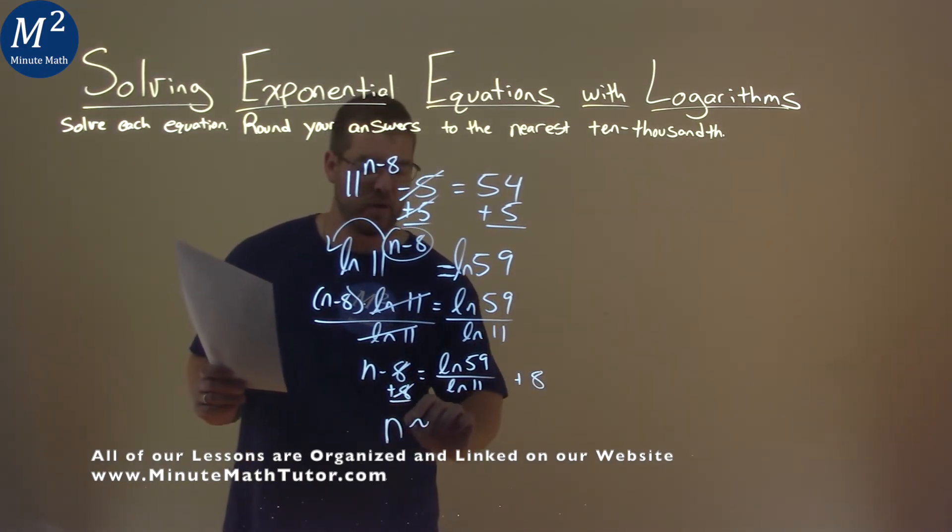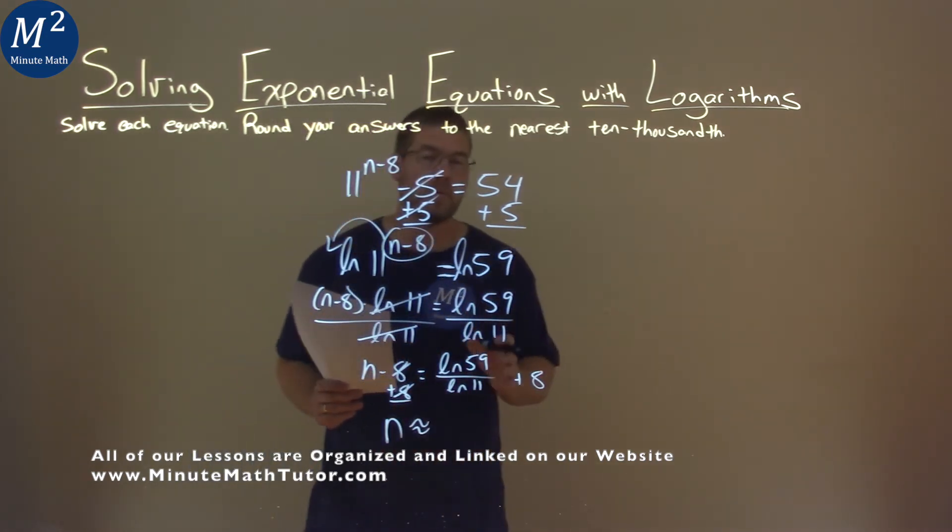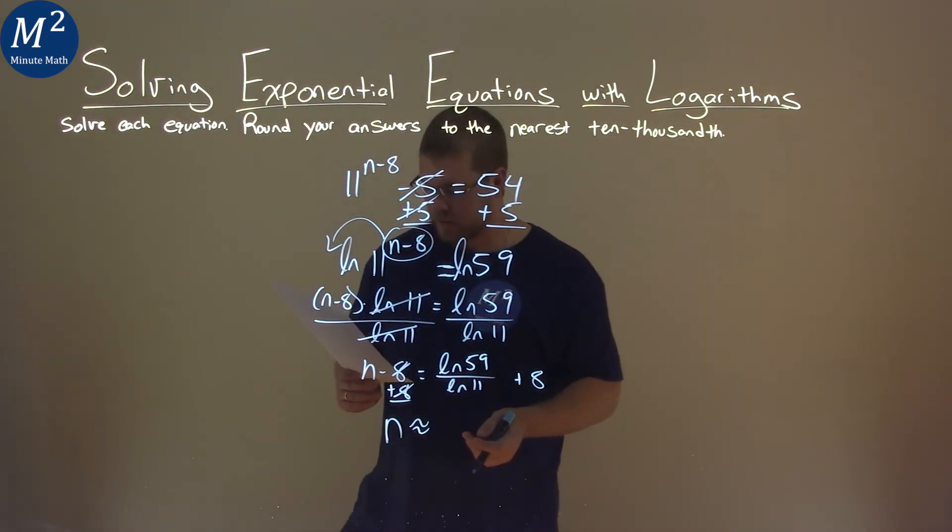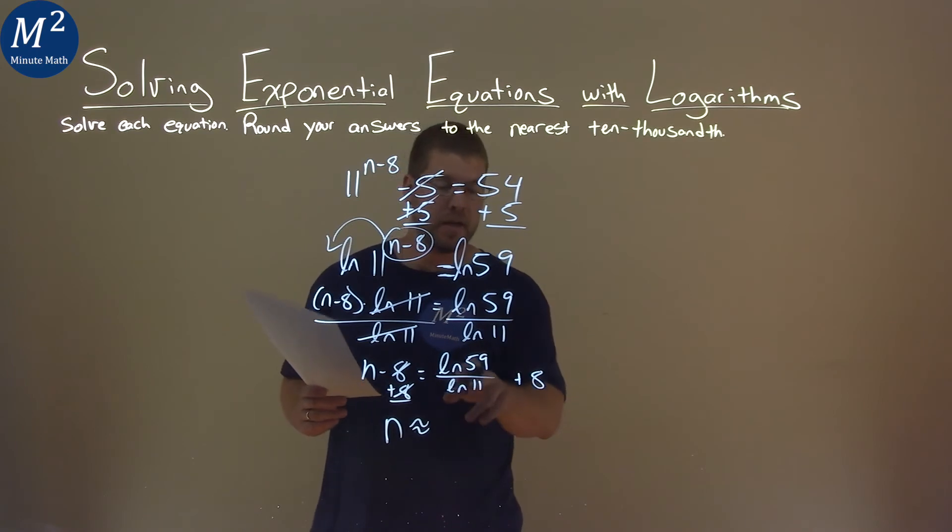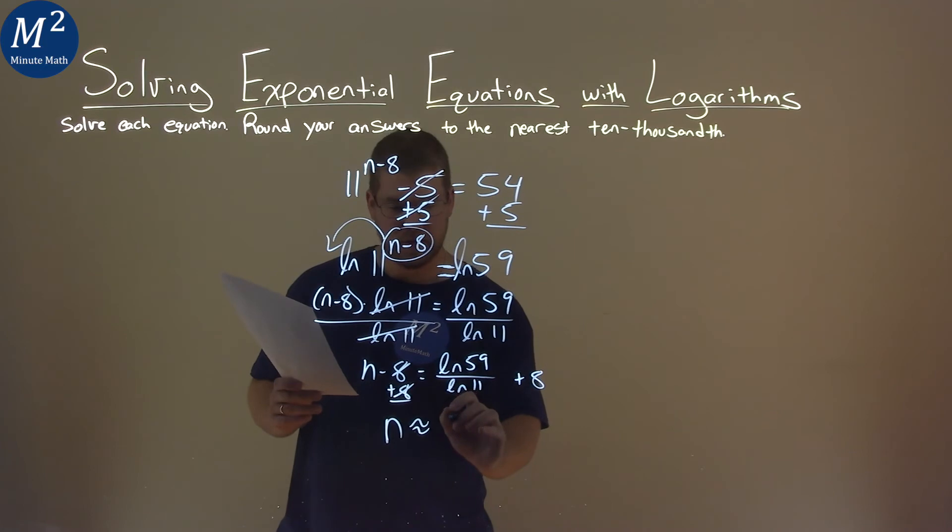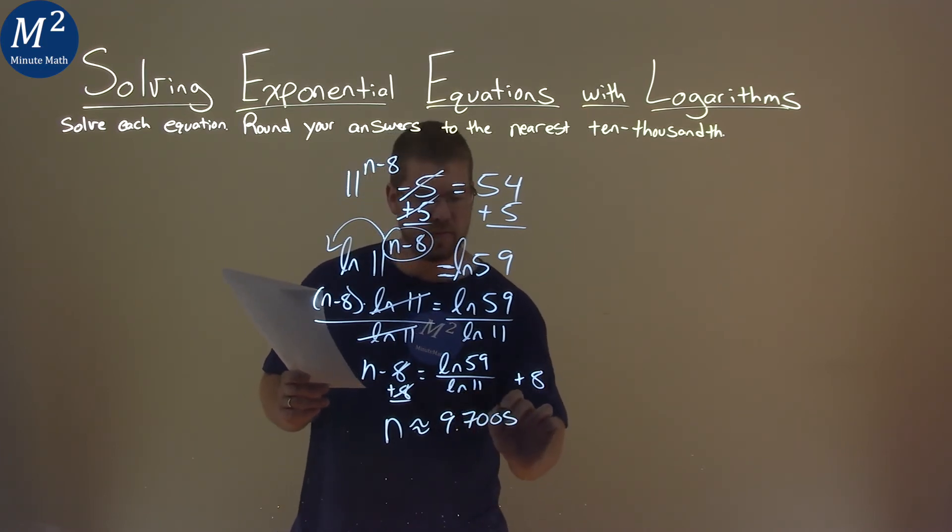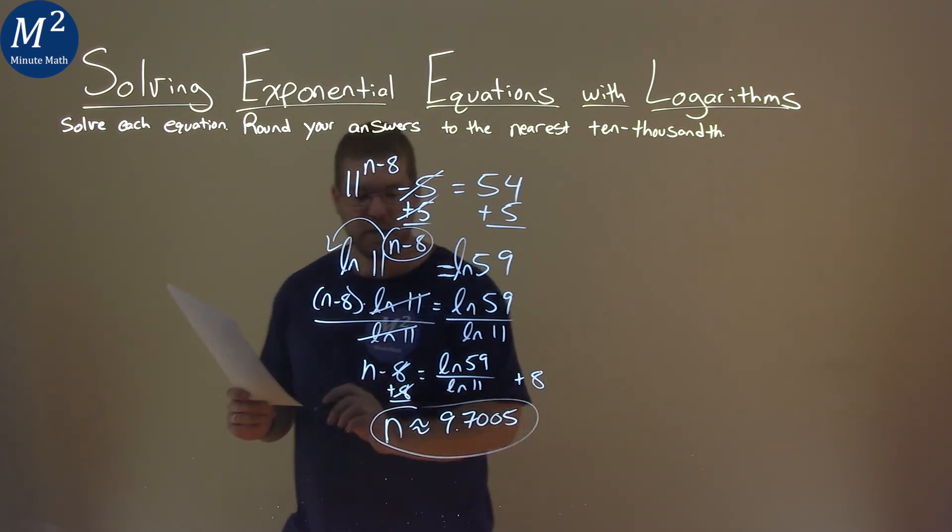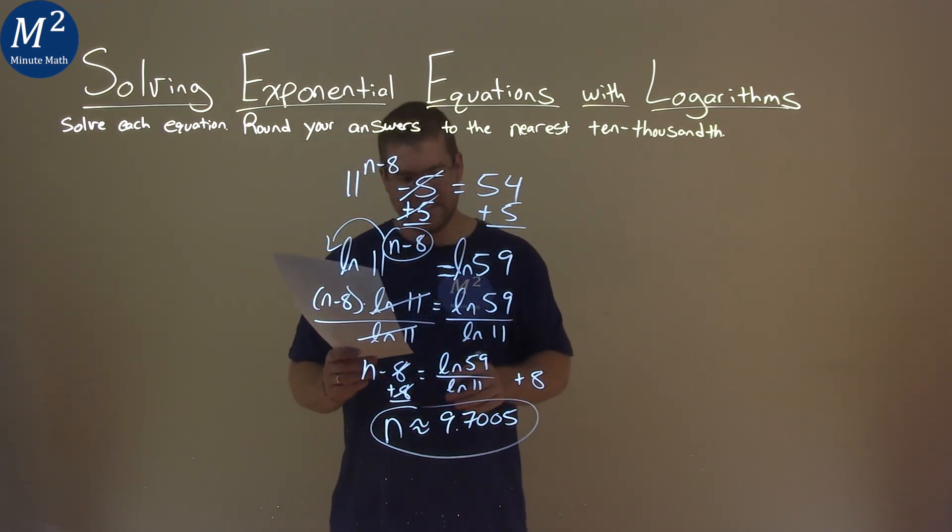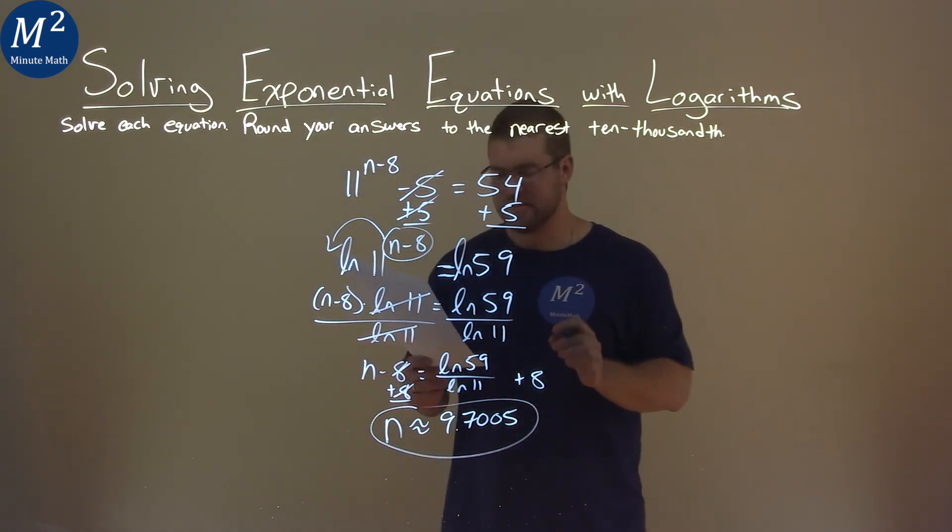n now is going to be approximately, we'll use our calculator at this point to get a decimal answer when we round it. The natural log of 59 divided by natural log of 11 plus the 8 is approximately a 9.7005. And so our final answer here is n is approximately equal to 9.7005.